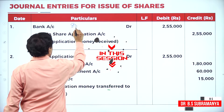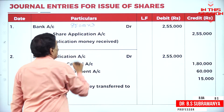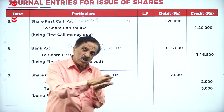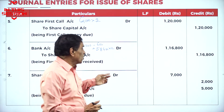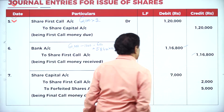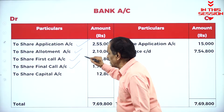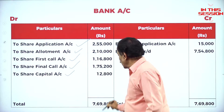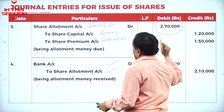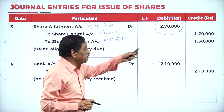You got 85,000 applications at the rate of rupees 3. How much you receive? 2,55,000. Final call: 1,600 shares has gone, so you got only 58,400. That gives 1,16,800. This is on the first call; this is on the final call. What is the total amount you got? 7,69,800. Share allotment account data: 2,70,000. Share capital.